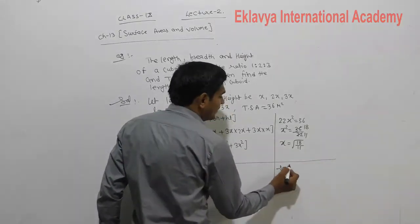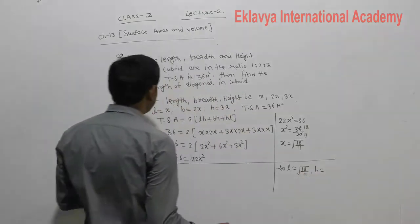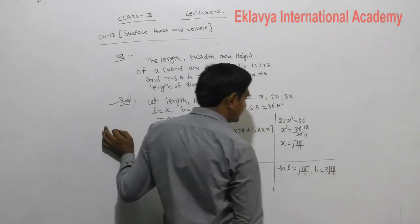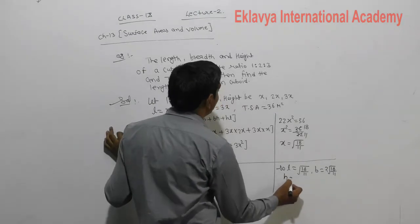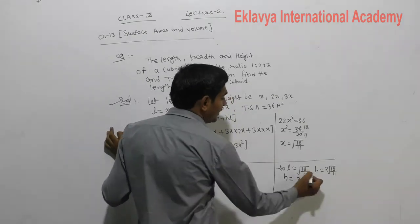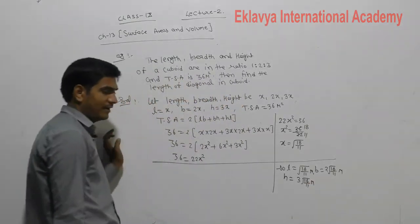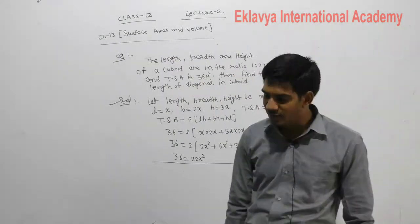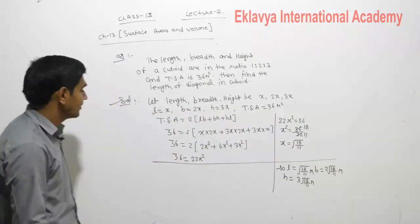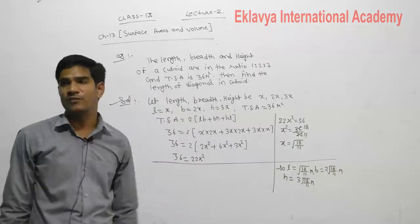So: length L = √(18/11), breadth B = 2√(18/11), and height H = 3√(18/11), all in meters. You will use the long division method to find the value of √18 and √11, then substitute to get the actual values of L, B, and H. Then we will find out the length of the diagonal in the cuboid.